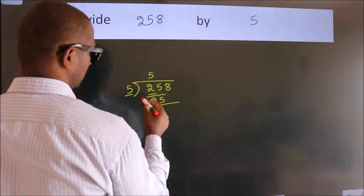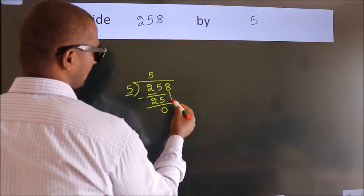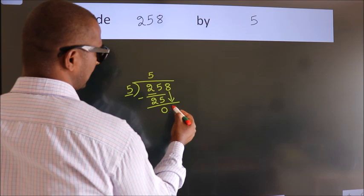Now we should subtract. We get 0. After this, bring down the beside number. So 8 down.